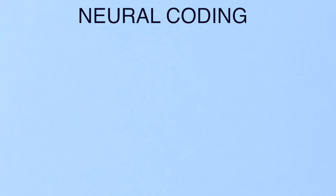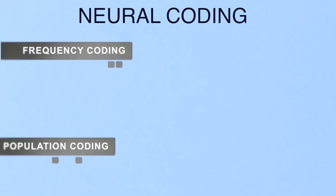In neural coding, we have two coding mechanisms. First one is frequency coding, and second one is population coding.